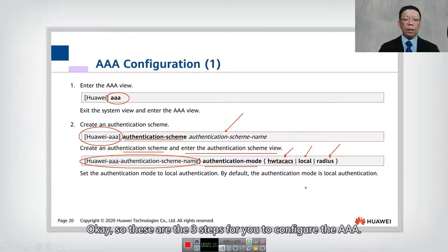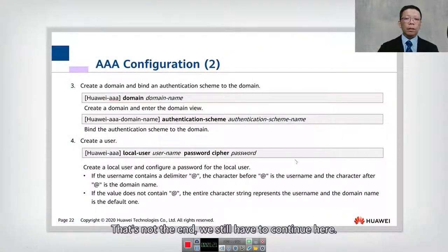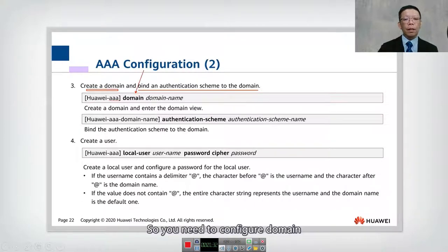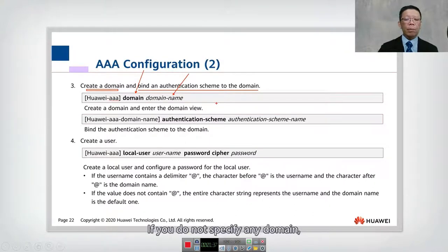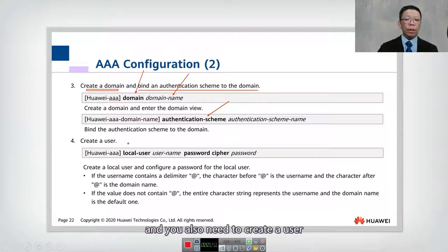Inside the scheme view, you need to configure the authentication mode. As mentioned earlier, there are three modes: no authentication, local authentication, or AAA authentication. AAA has two options: HW TACACS or RADIUS. These are the three steps to configure AAA. Step three is to configure the domain — create a domain and bind the authentication scheme to it. If you do not specify any domain, it will go into the default domain.